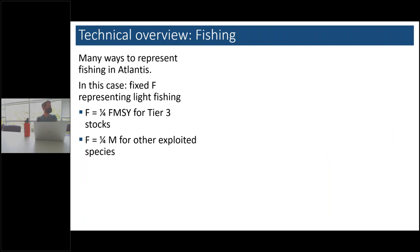The last relevant bit is fishing. There are a few ways to represent fishing in Atlantis. For the purpose of what I'm talking about today, a fixed F was deemed good enough — we're not interested in reproducing historical removal patterns. We set a fraction of FMSY for everything that has FMSY, and quarter M for other exploited species. The idea is just to represent some level of light fishing.